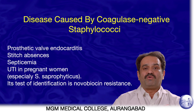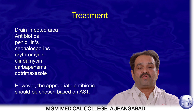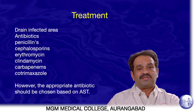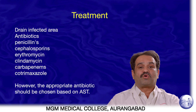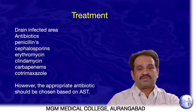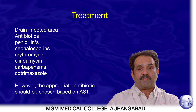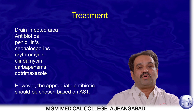Treatment for S. aureus and CoNS infections is generally similar. If an abscess is present, surgical drainage is the first step. Common antibiotics used include penicillins, cephalosporins, carbapenems such as imipenem, meropenem, and doripenem, as well as erythromycin, clindamycin, and cotrimoxazole. Appropriate antibiotic selection should be guided by the antibiotic sensitivity report from the microbiology department.